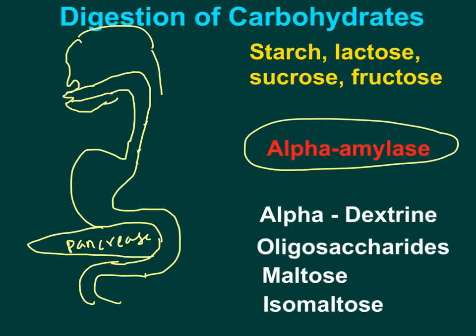This saliva contains an enzyme called salivary amylase — specifically salivary alpha amylase. Salivary alpha amylase belongs to the alpha endoglycosidase class of enzymes. It is going to break down alpha 1,4 glycosidic linkages present in starch.